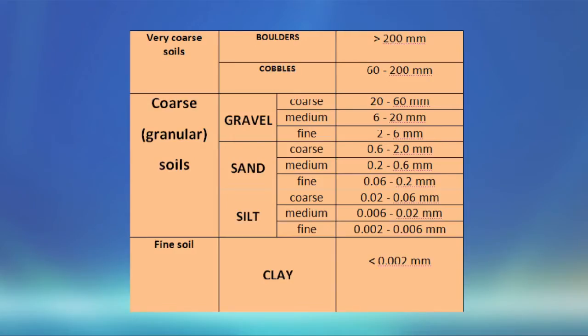We have a table here showing the different types of soils. I will focus on three soils that are the most representative in the UAE: gravel, sand, and silt. These three soils are granular soils because they include small grains.